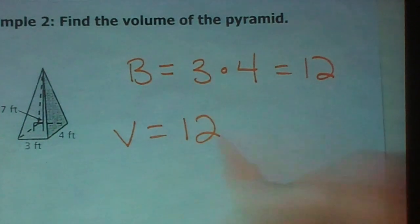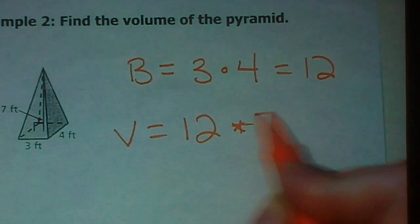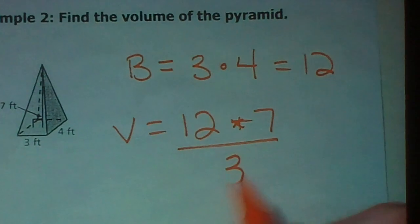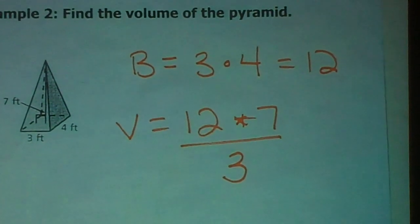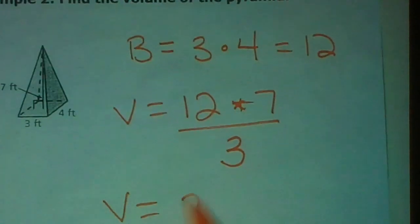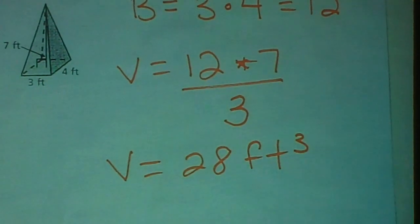3 scoops of oatmeal. All right, calculate all that. 28 cubic feet, or feet cubed.